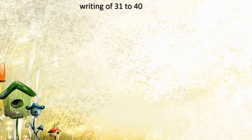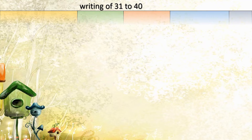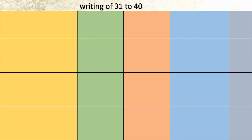Now let us try to write 31 to 40 in the same manner as we wrote 21 to 30. Here you can see bundles of matchsticks — this is 1 ten, this is 2 tens, this is 3 tens. You know that in one bundle there are 10 matchsticks, so this is 30. One more single matchstick is there.